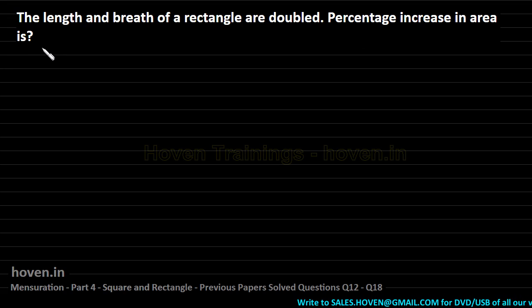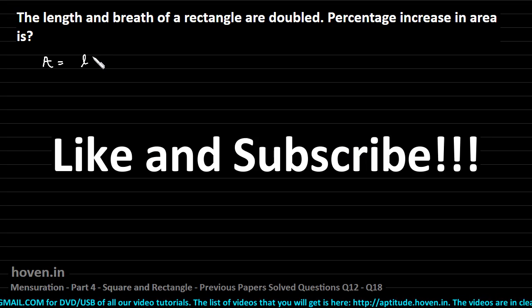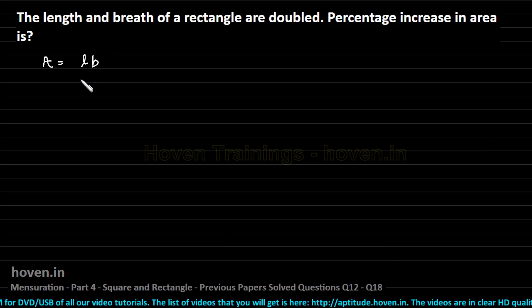This is a question that requires us to find the increase of the area, and then from that increase we can find out the percentage increase. We can start by assuming that the length and breadth are L and B. So we can write A is equal to LB. This is the area before increasing.